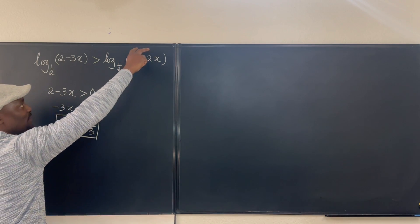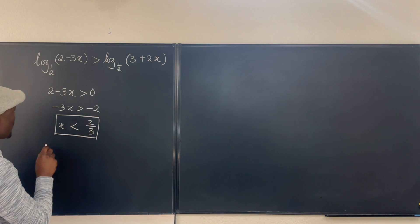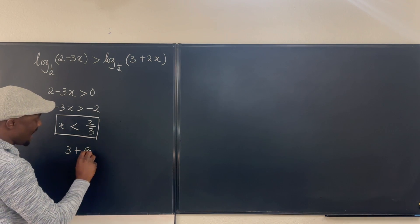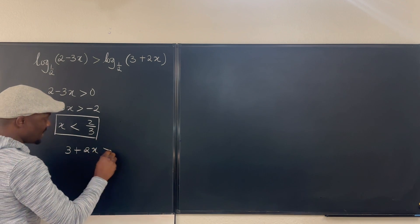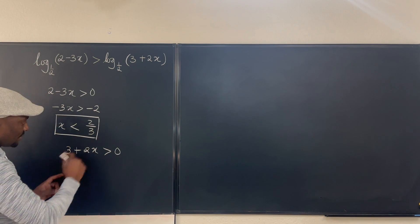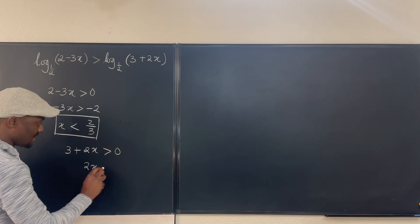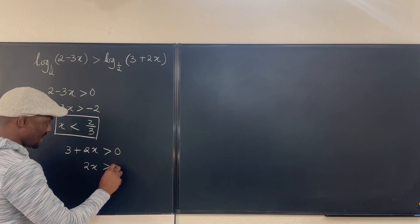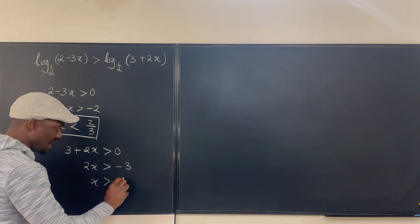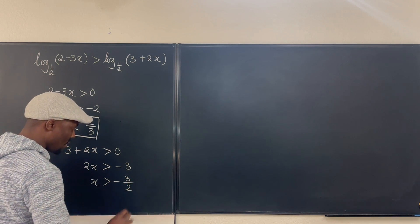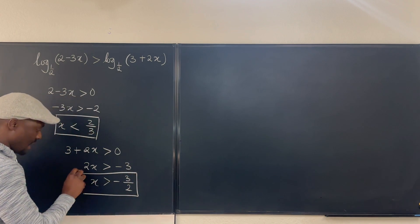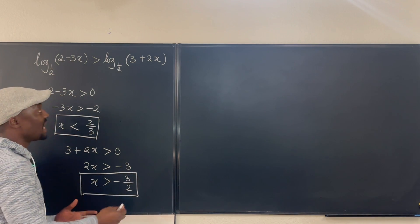The second part is to find the domain of this. We also know that 3 plus 2x must be greater than zero. Okay, and if we move 3 over, we have 2x is greater than negative 3. And we have x is greater than negative 3/2. Okay, x is greater than negative 3/2 is another domain that we get.